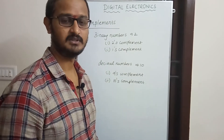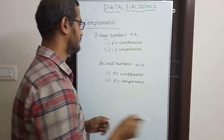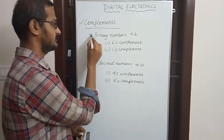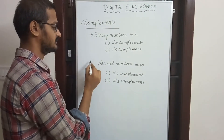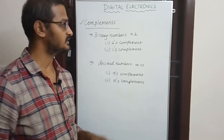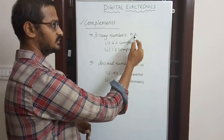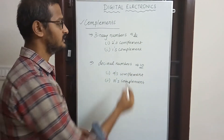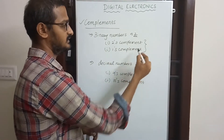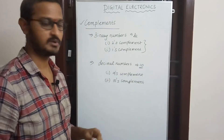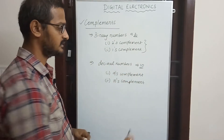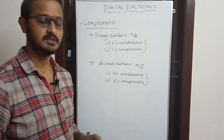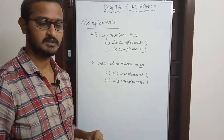Hi friends, now we are going to talk about complements. There are two types of complements: binary numbers and decimal numbers. Binary numbers use base 2 and decimal numbers use base 10. Binary numbers have 1's complement and 2's complement. Decimal numbers have 9's complement and 10's complement.